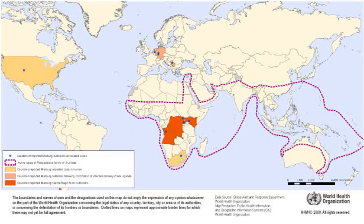Filovirions can easily be visualized and identified in cell culture by electron microscopy due to their unique filamentous shapes, but electron microscopy cannot differentiate the various filoviruses alone despite some overall length differences. Immunofluorescence assays are used to confirm identification.